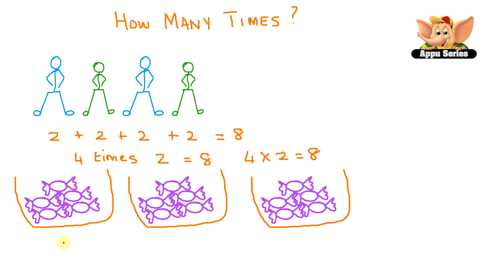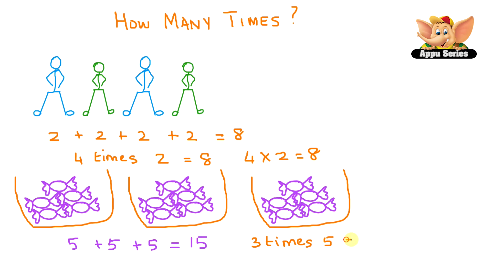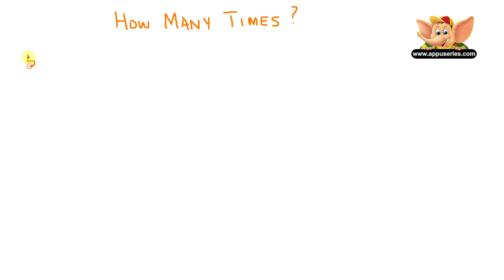So you can see that multiplying is adding something many times. Let me give you one more example. Let's say there are five candies in three boxes. How many candies do we have in all? If you add it up, it would be 5 plus 5 plus 5 equals 15. If you multiply it, it would be 3 times 5, because you're adding up 5 three times. So that's 3 times 5 equals 15.